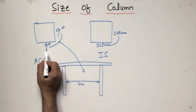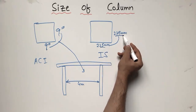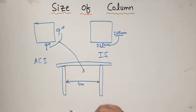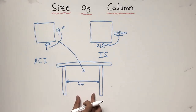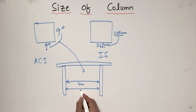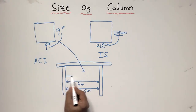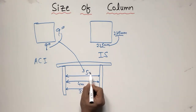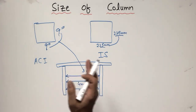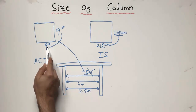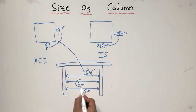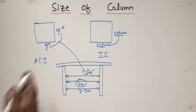When you are using the 9 inches by 9 inches, or 225 mm by 225 mm — the least dimension of the RCC column cross-section — you are not allowed to use a distance between two columns greater than 4 meters. You should always keep the spacing less than 4 meters; you can use 3.5 meters or 3 meters. If you use 5 meters, it is not allowed because more span means more load, which may cause collapse. The maximum spacing for minimum-size columns is 4 meters.